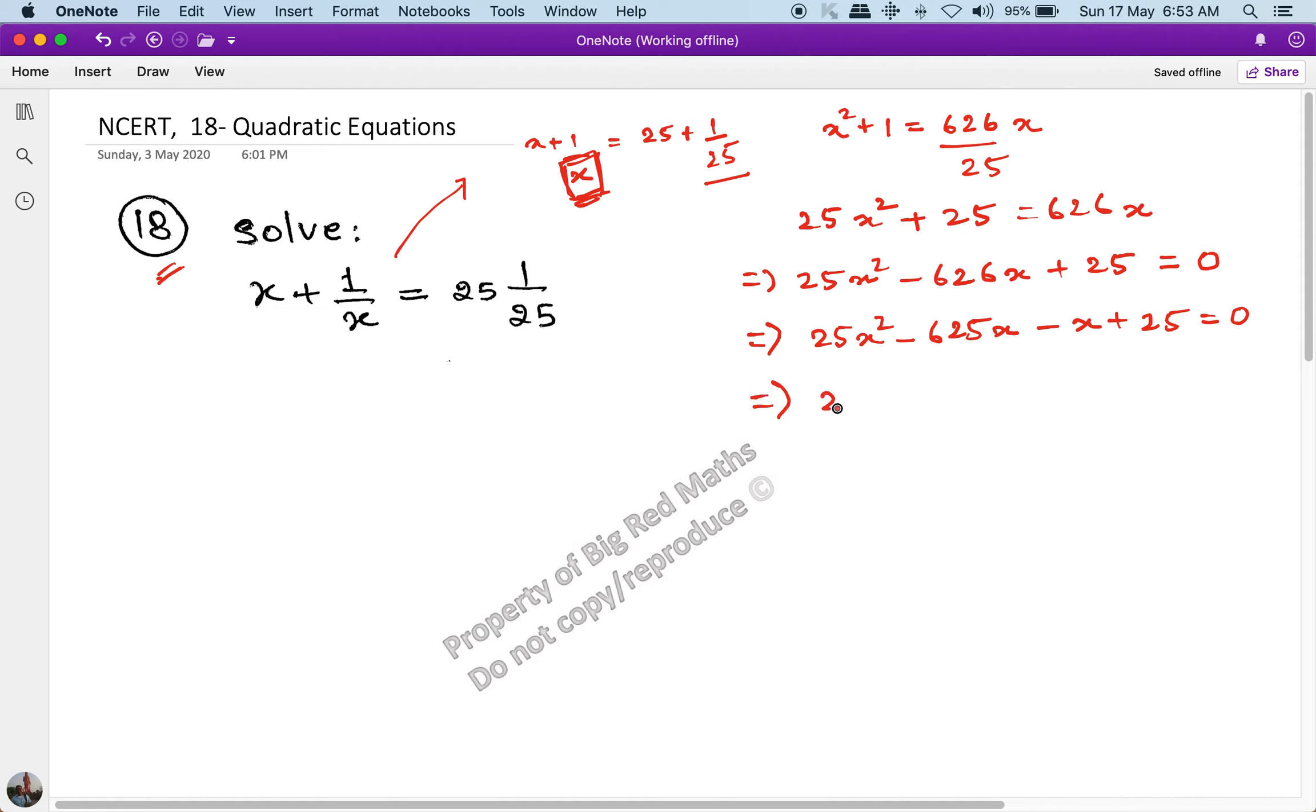And this becomes, if I take 25x common here, this becomes x minus 25. And if I take minus 1 common here, this becomes x minus 25. This whole equals 0. And this becomes x minus 25 into 25x minus 1 is equal to 0.